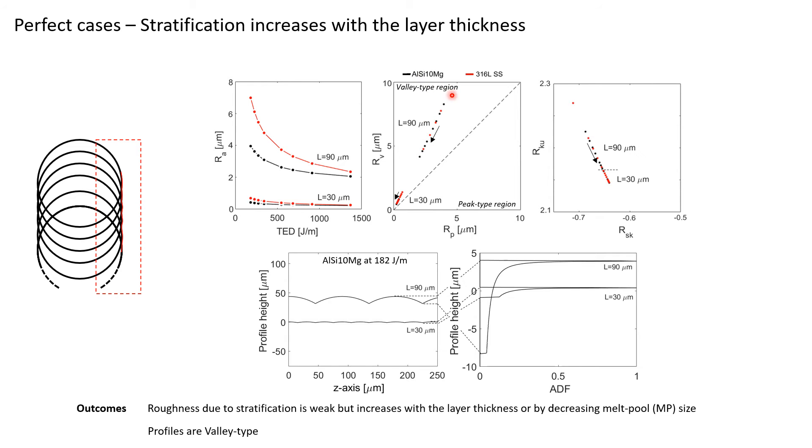The profiles are valley type, as Rv is always higher than Rp whatever the thickness layer or the material is, and this is confirmed by the negative value of Rsk. As the material is well spread all over the profile, the value of Rku is always below 3. And as I said before, trends between both materials are the same. The curves are just shifted along the TED axis. So if we take the black curve here, you can just shift this curve, it will exactly give the same result because this is a geometrical model. In the following, I will only use the aluminum silicon 10 Mg as a reference material.